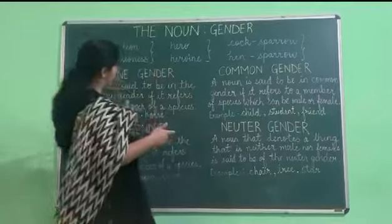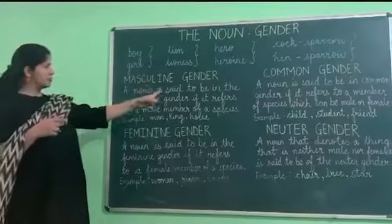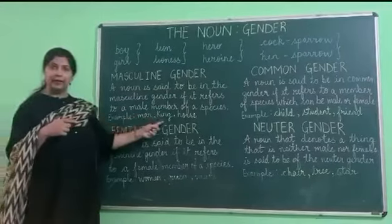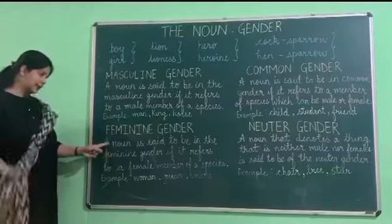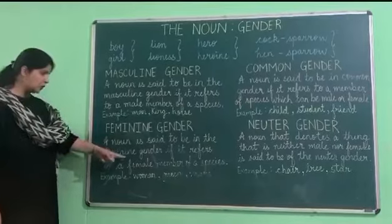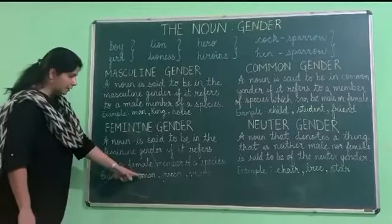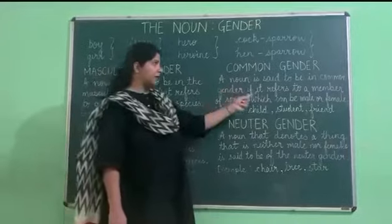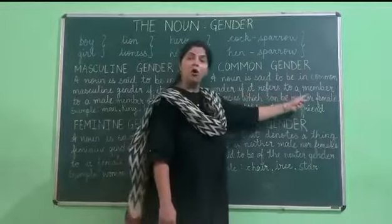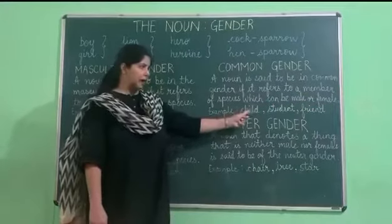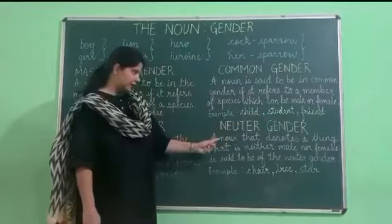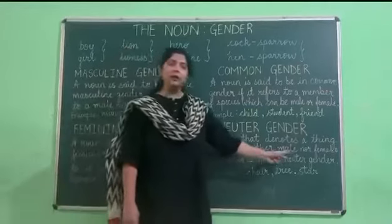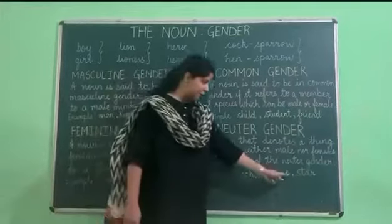Let's have a quick revision. Masculine gender: a noun is said to be in the masculine gender if it refers to a male member of the species. Example: man, king, horse. Feminine gender: a noun is said to be in the feminine gender if it refers to a female member of a species. Example: woman, queen, mare. Common gender: a noun is said to be in the common gender if it refers to a member of a species which can be male or female. Example: child, student, friend. Neuter gender: a noun that denotes a thing that is neither male nor female is said to be of the neuter gender. Example: chair, tree, star.